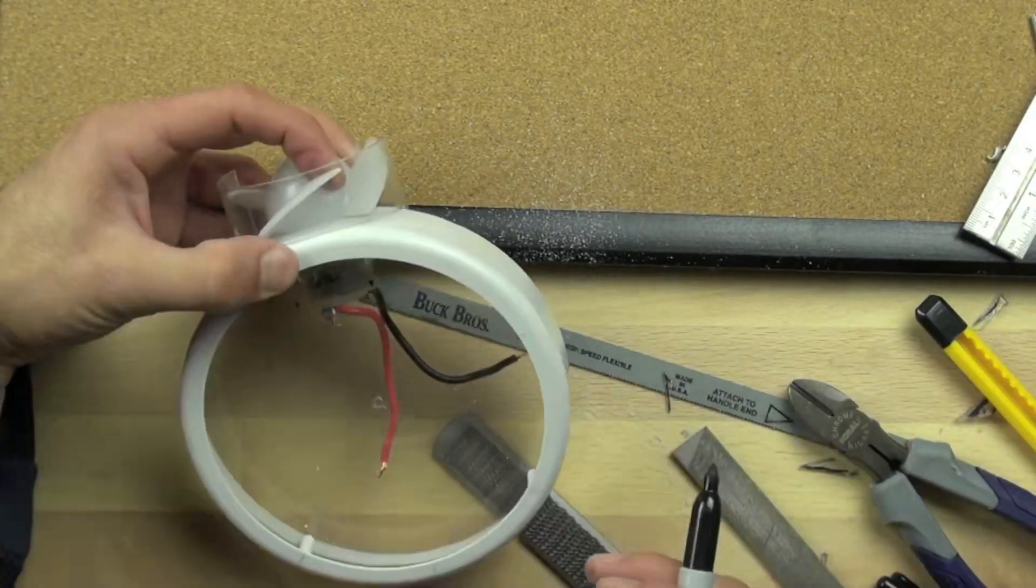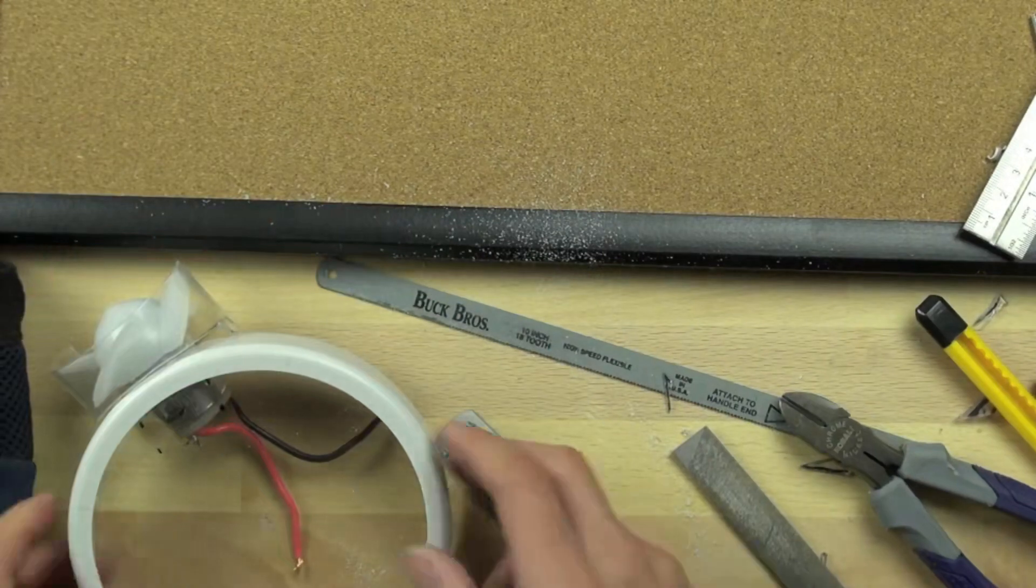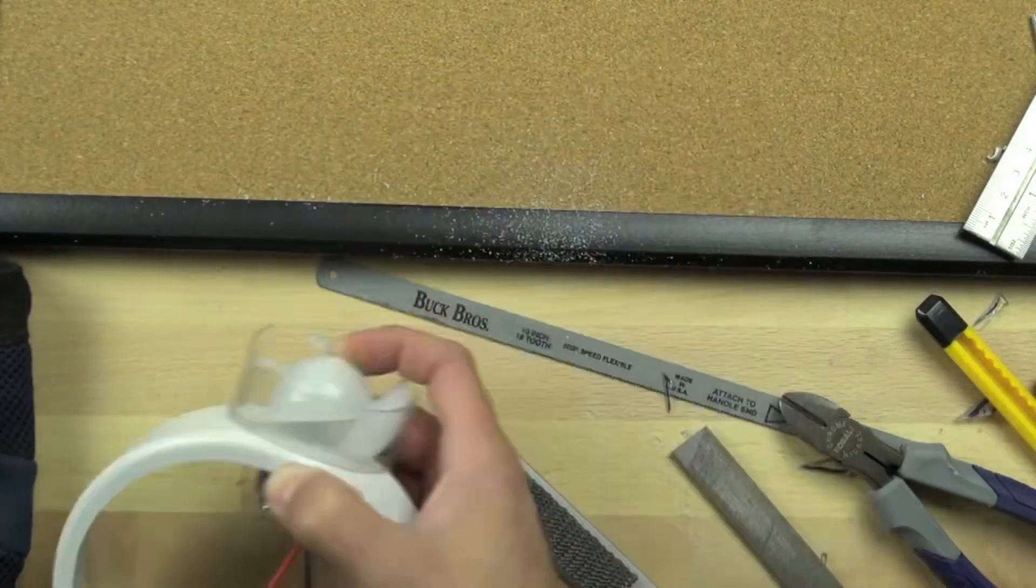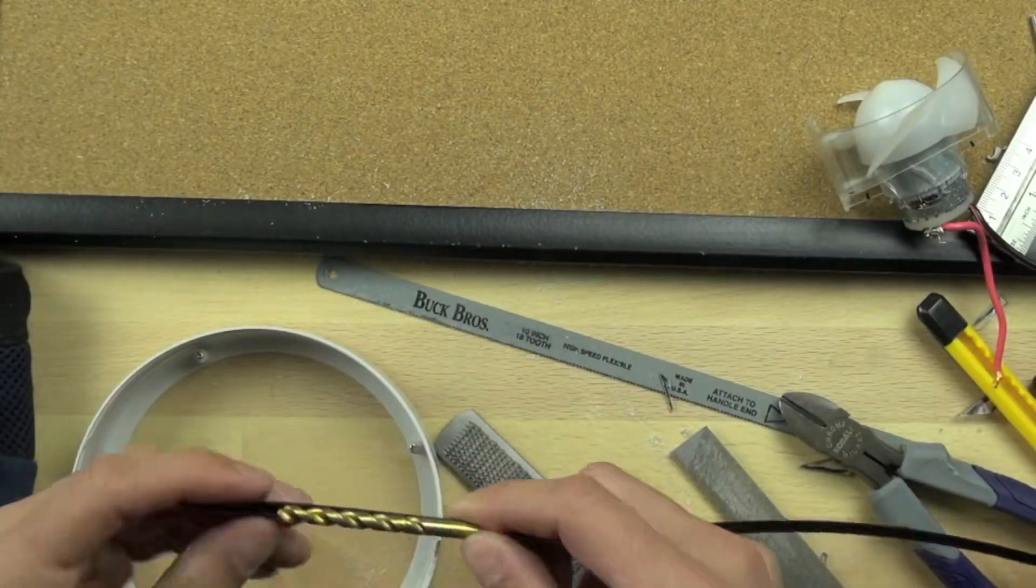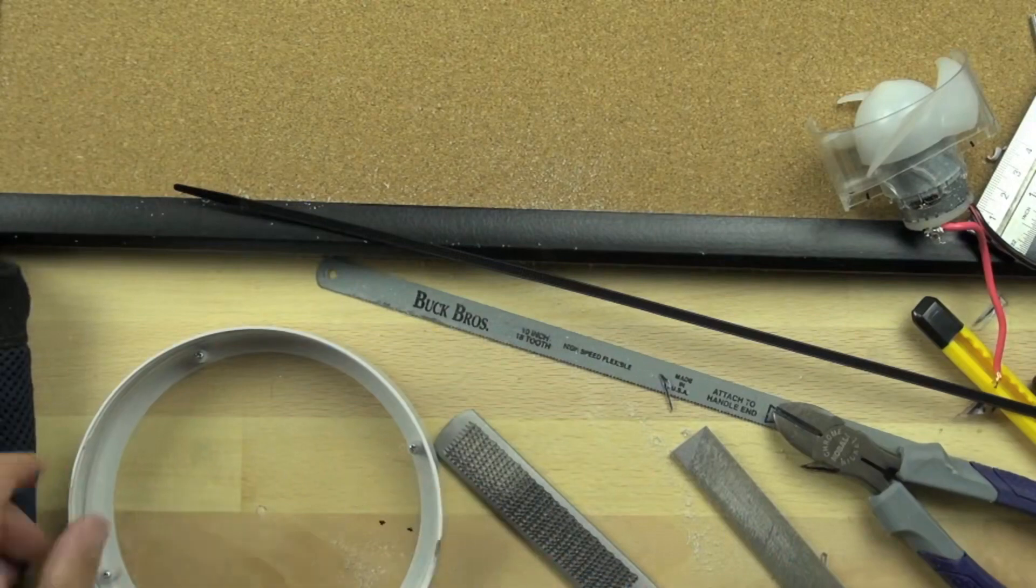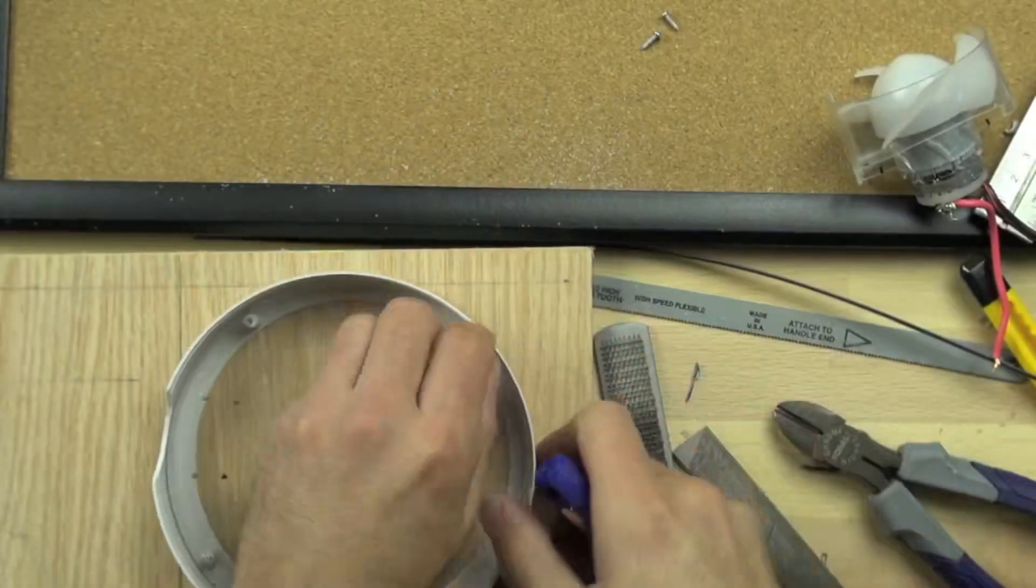Right now we're just making marks. We made four little marks there and those marks go on either side of the motor. We're going to use those to run our zip tie through, from one side to the other. We're just going to use a quarter inch drill bit.